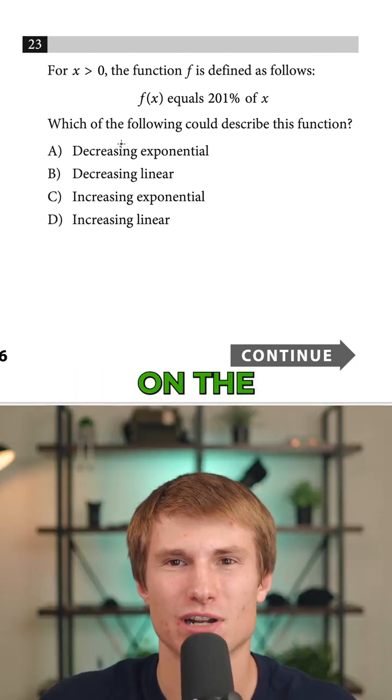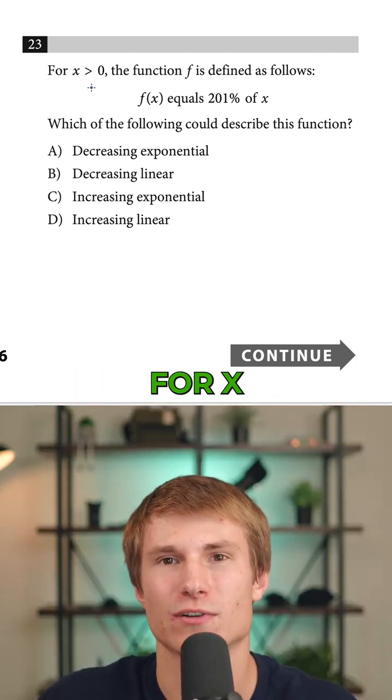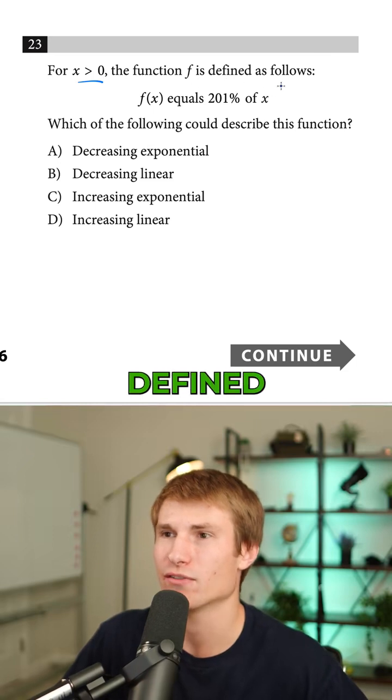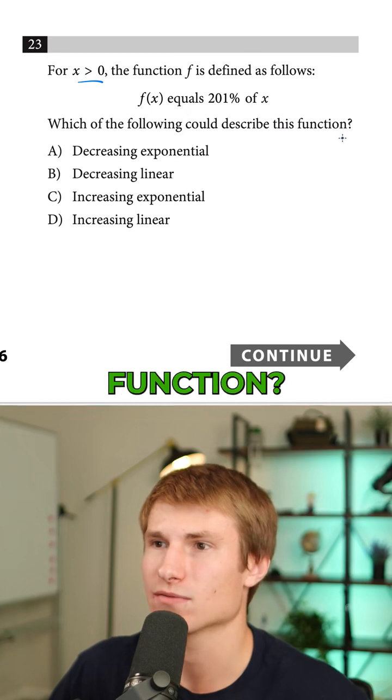This is how to avoid a common misconception on the SAT. Question 23 states: for x is positive, the function f is defined as follows. f of x equals 201% of x. Which of the following could describe this function?